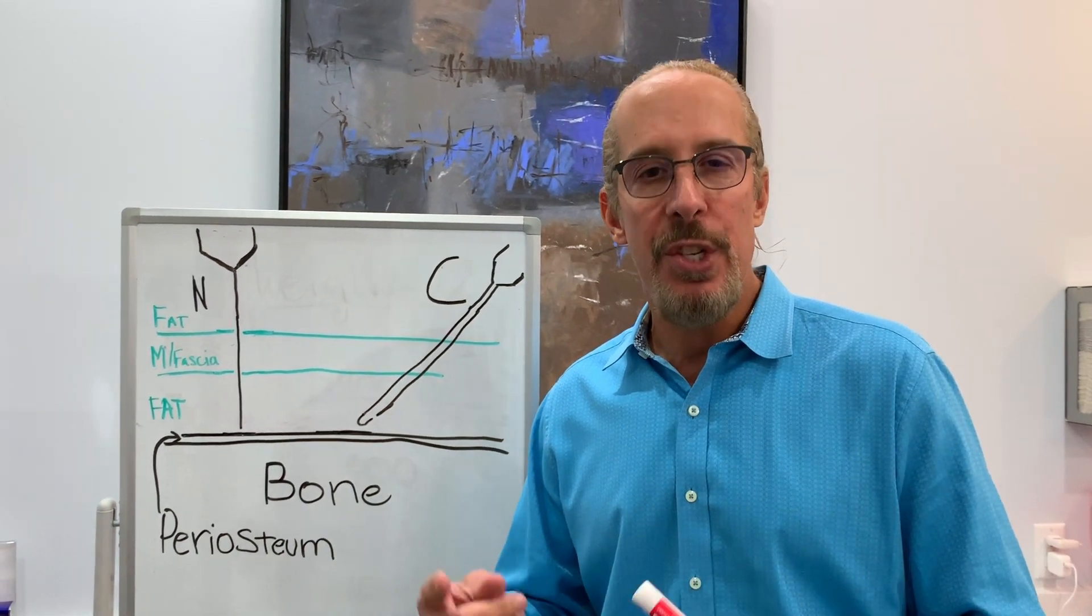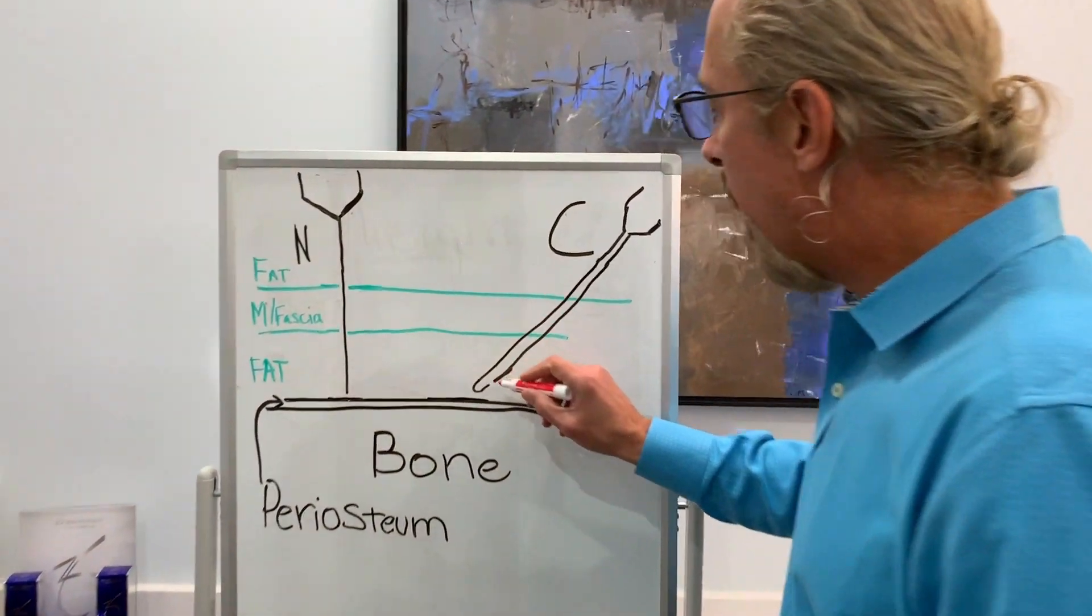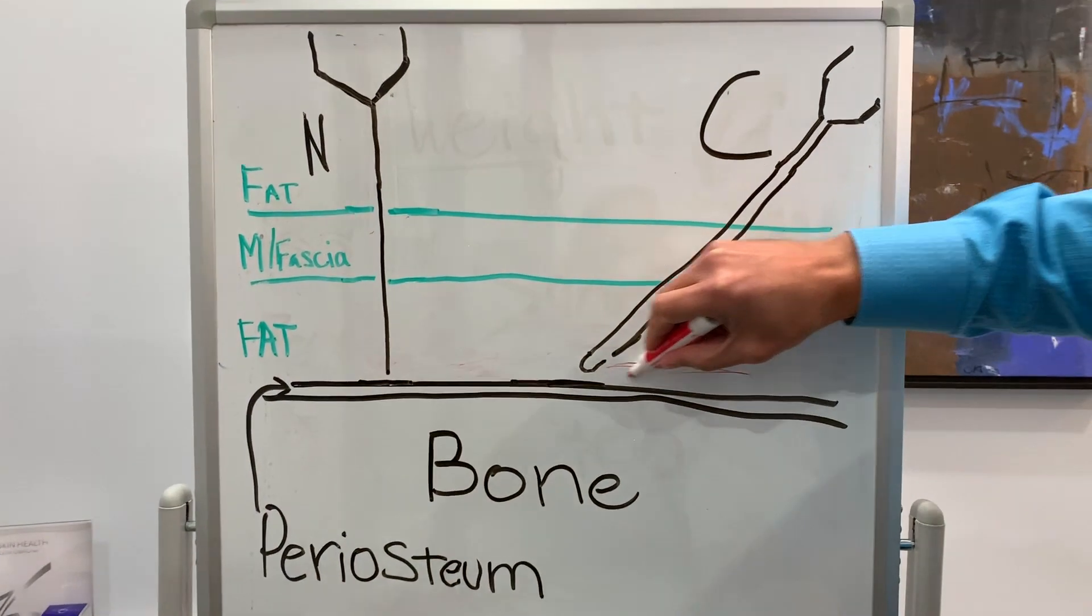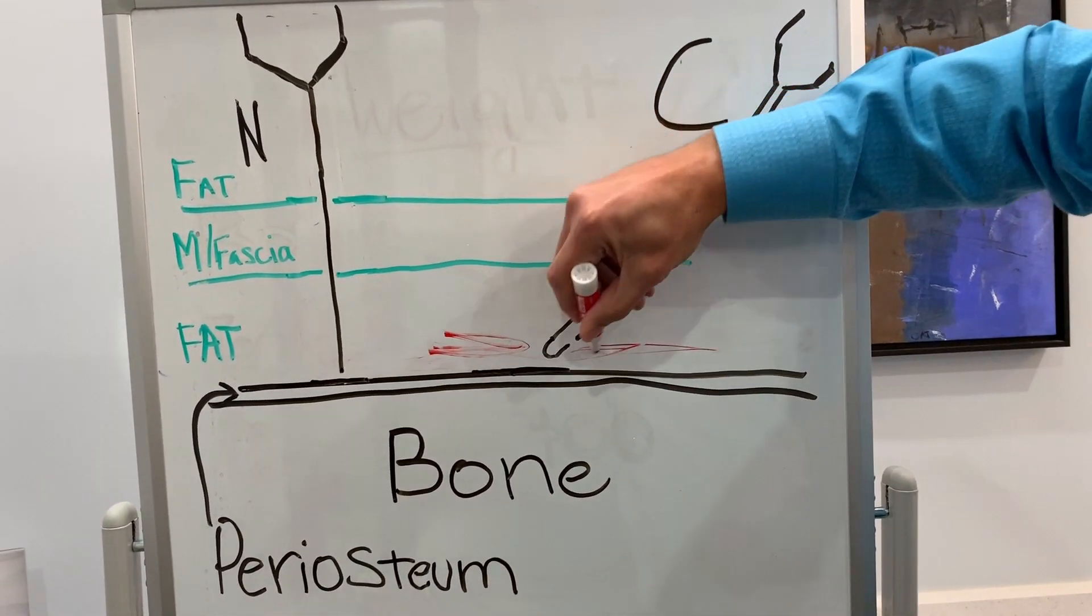So these were the results, it was very interesting. First, with the cannulas, they injected in the superperiosteal plane and the filler went in the superperiosteal plane and it stayed there.